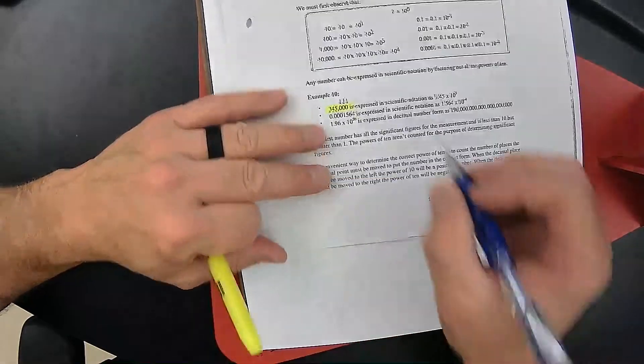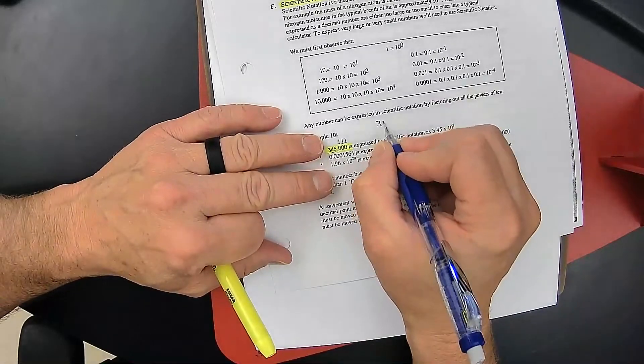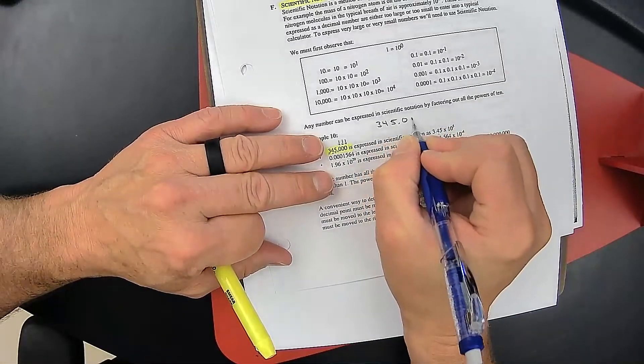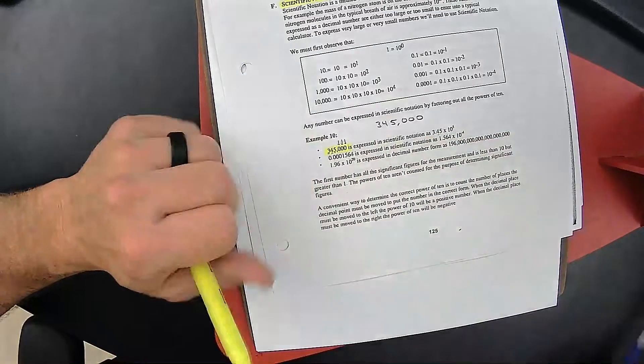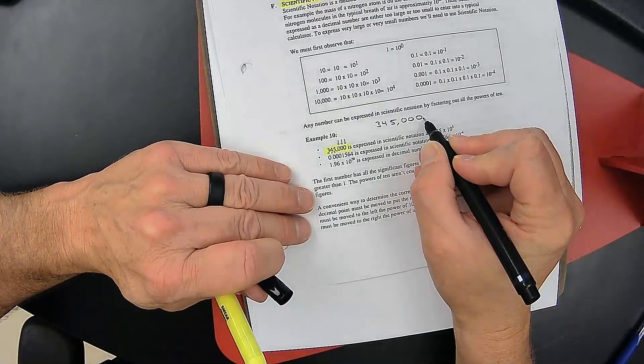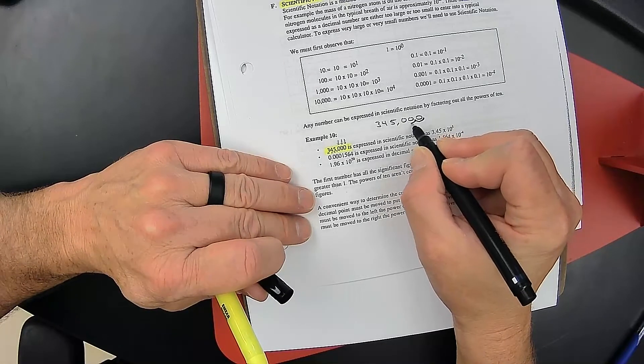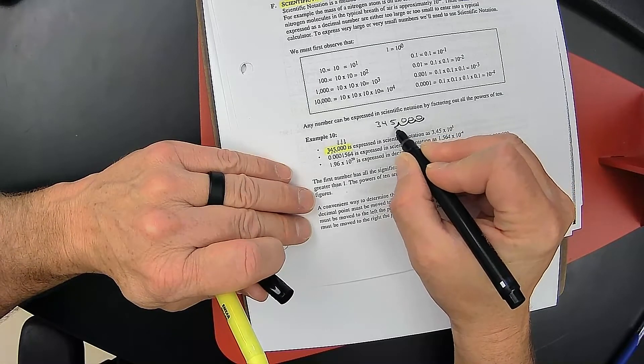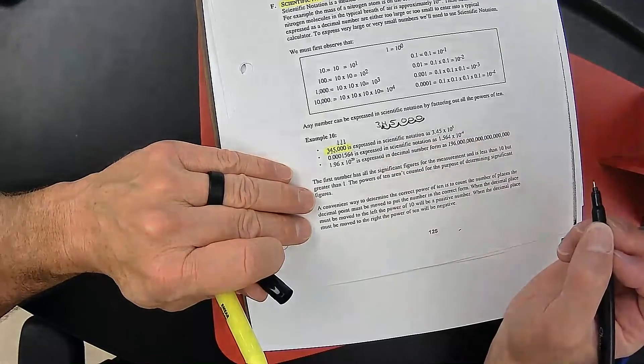So when I'm taking 345,000 and I'm turning it into scientific notation, I take where the decimal would be and I begin to move it. I move it 1, 2, 3, 4, 5 places over.